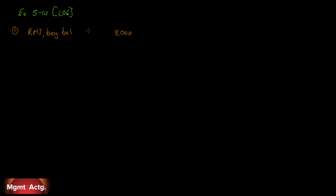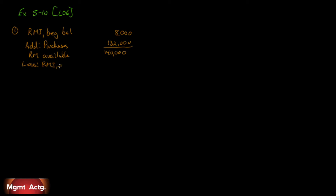Starting with raw materials inventory: beginning balance $8,000, plus purchases $132,000, equals raw materials available $140,000. Less ending raw materials inventory of $10,000 — that leaves raw materials used of $130,000.